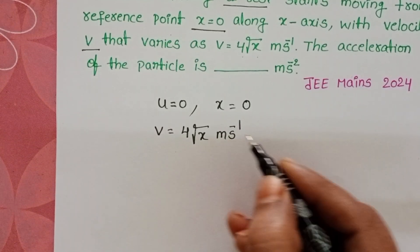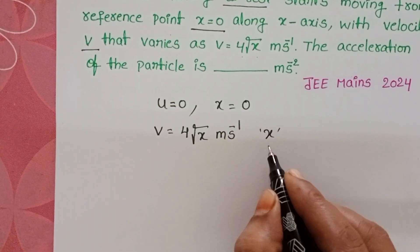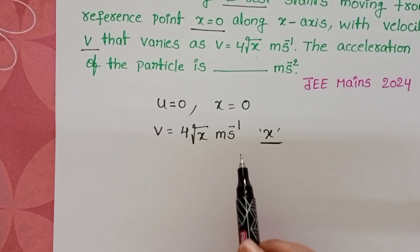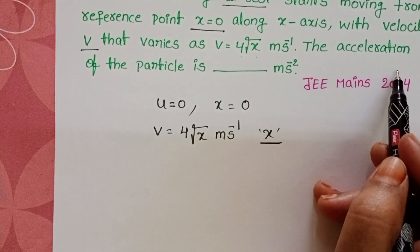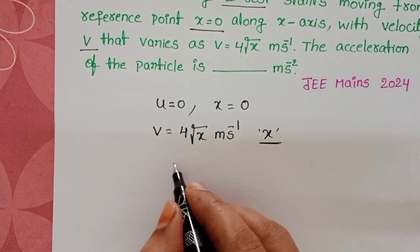At this velocity the distance travelled by the particle is x. By using this information we have to find out the acceleration of the particle.